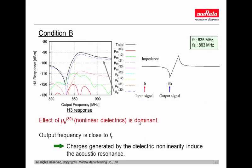In condition B, the effect of μE30, which represents the nonlinear dielectrics, is dominant. In this condition, acoustic waves are hardly excited in the input signal region because the frequency is much smaller than the resonance frequency. On the other hand, the output frequency is close to resonance. So in this case, charge generated by the electric nonlinearity induces the acoustic resonance.